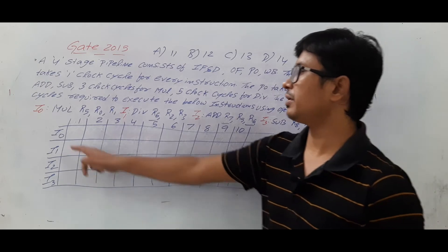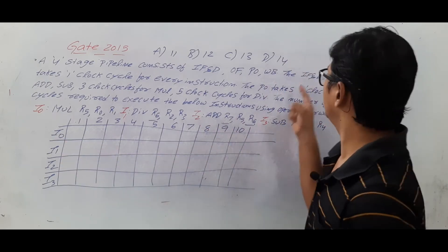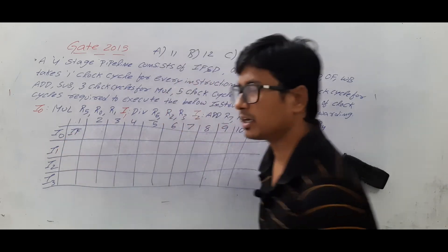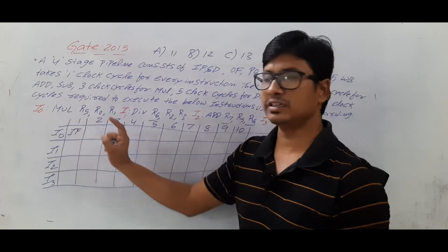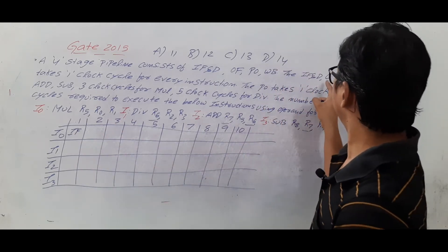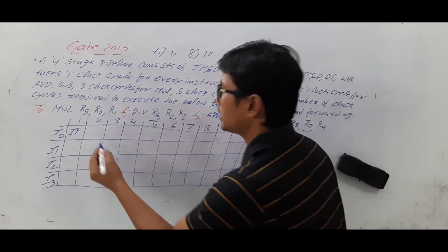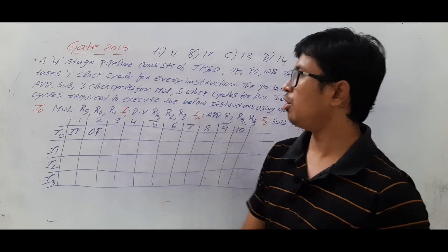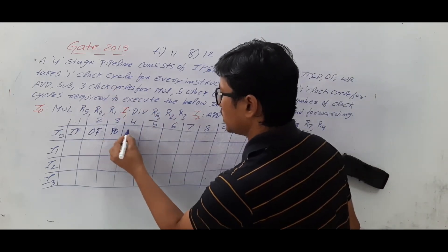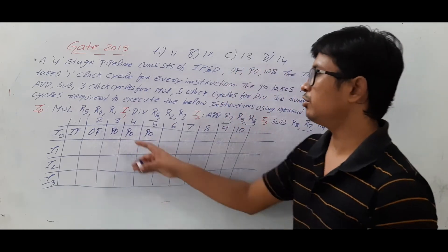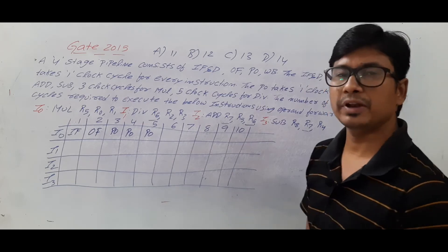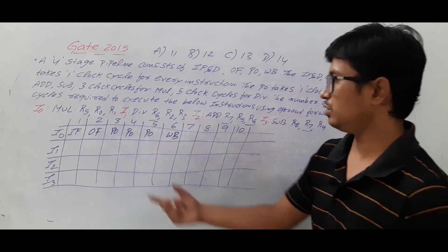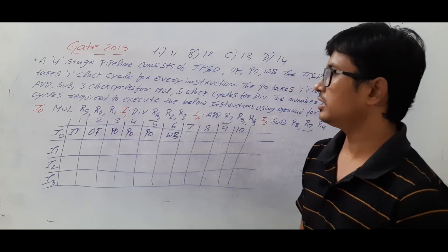For instruction I0, in clock cycle 1 we perform instruction fetch and decode (written as IF). Clock cycle 2 is operand fetch. Since I0 is a multiplication, the perform operation stage takes three clock cycles — cycles 3, 4, and 5. Then write back takes one clock cycle in cycle 6. So instruction I0 is completed using six clock cycles.